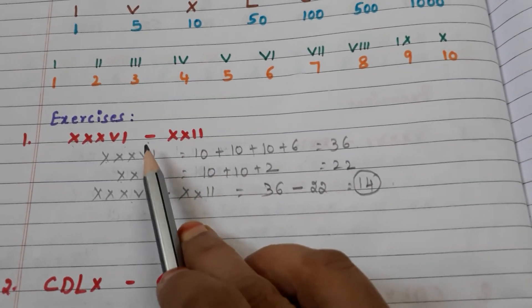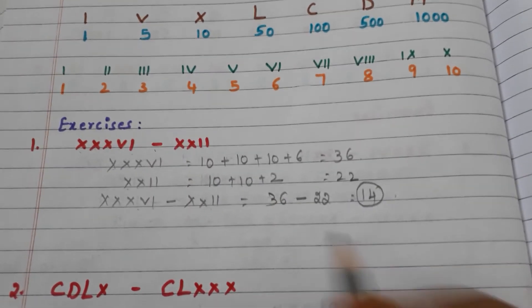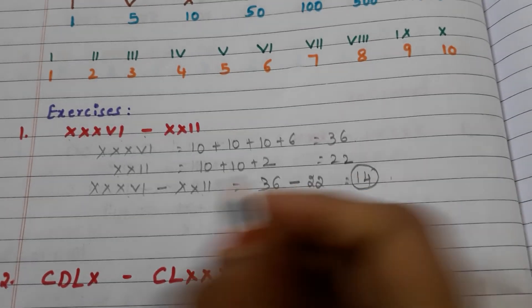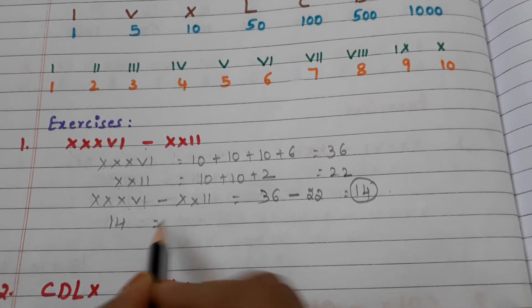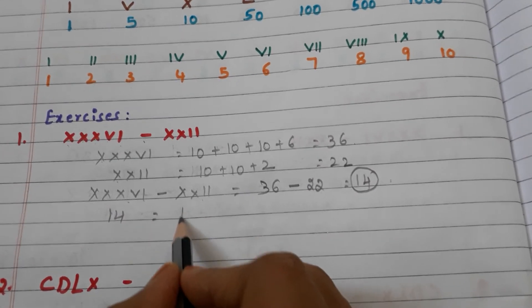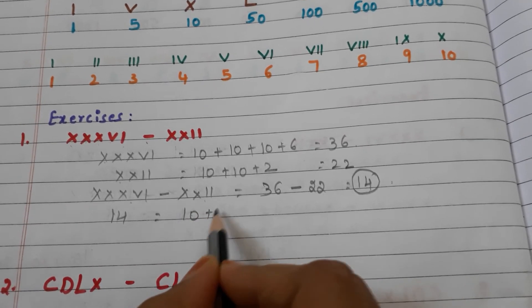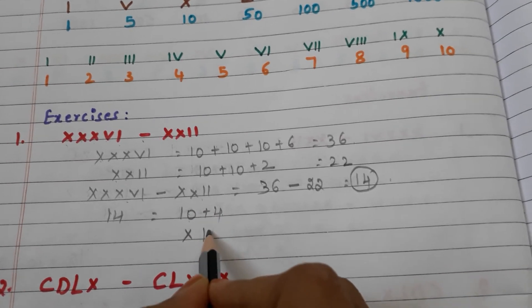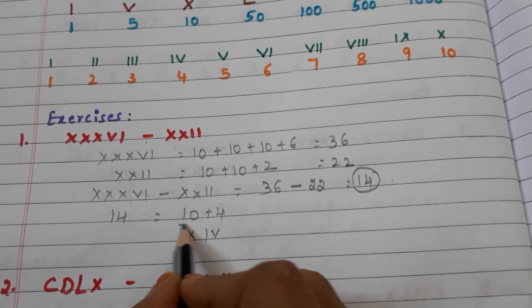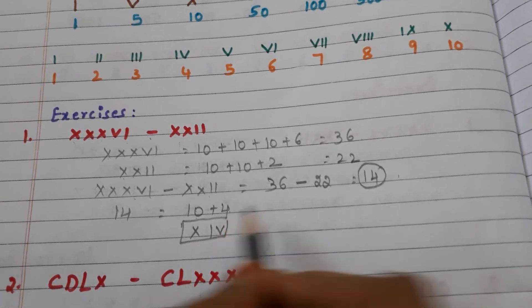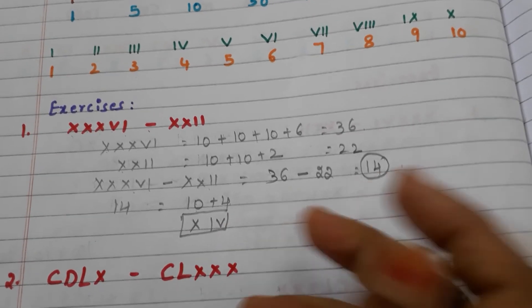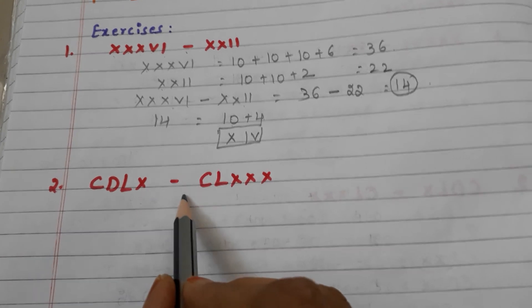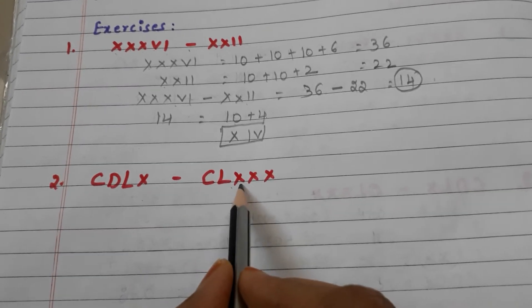We have to convert this number back into a Roman numeral because we have to represent the answer in Roman numerals. Take 14 — how can we write 14? 10 plus 4. 10 means X, and 4 means IV. So the answer is XIV.